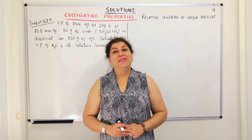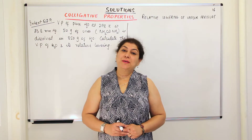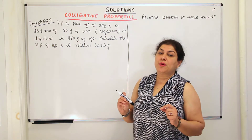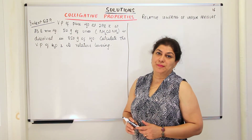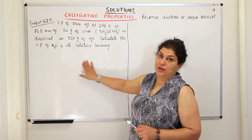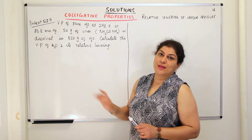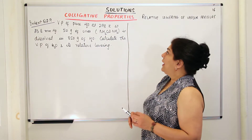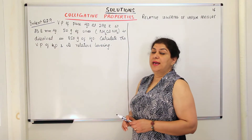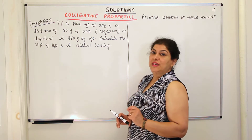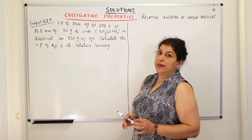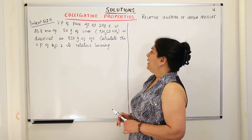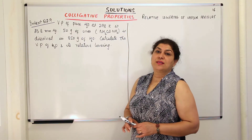Hello, I am Seema and welcome to part 16 of the chapter Solutions. Let us now solve a few numerical problems based on the colligative property relative lowering of vapor pressure. The first question I am going to solve is in-text question 2.9. The question states that the vapor pressure of pure water at 298 Kelvin is 23.8 mmHg. 50 grams of urea (NH₂CONH₂) is dissolved in 850 grams of water. Calculate the vapor pressure of water and its relative lowering.